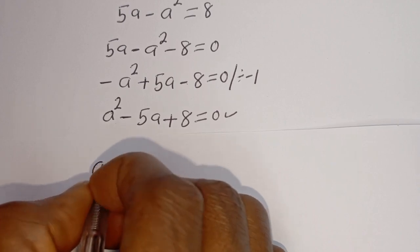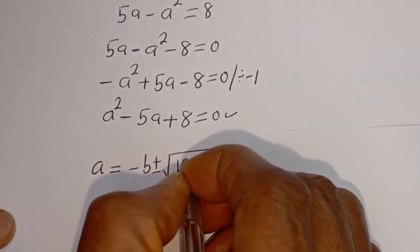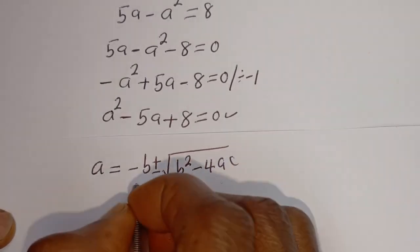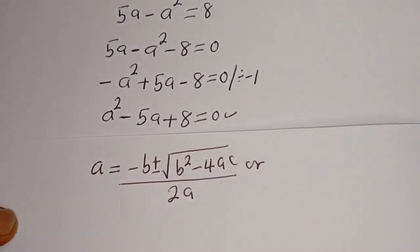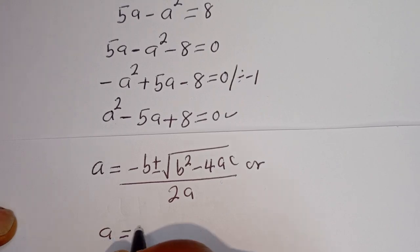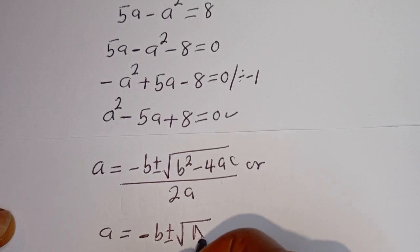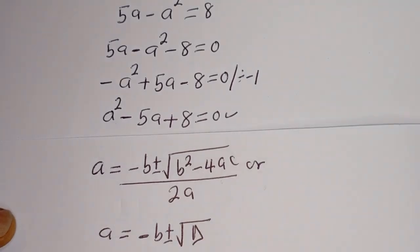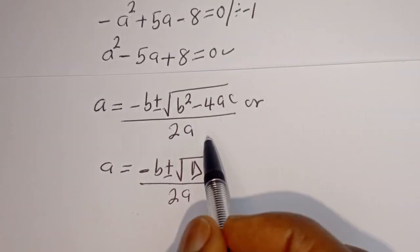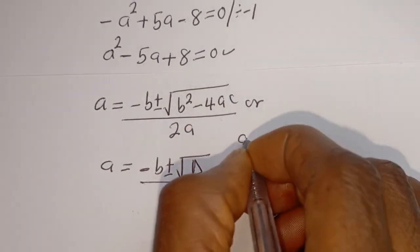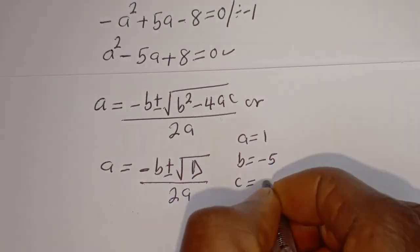Let's solve this using the quadratic general formula. The quadratic formula is given as A equals minus B plus or minus square root of B squared minus 4AC, over 2A. From this quadratic equation, the coefficient A is equal to 1, B is equal to minus 5, and C is equal to 8.